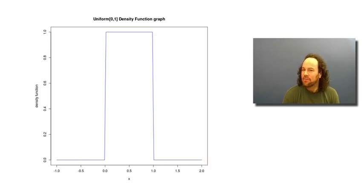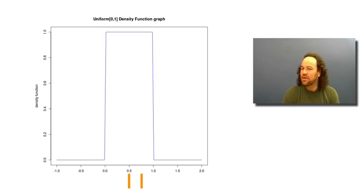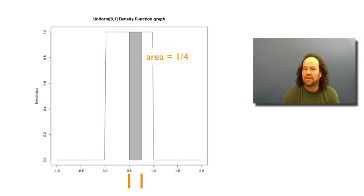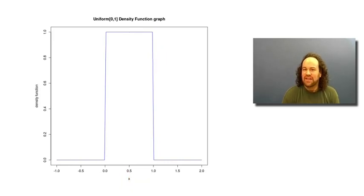We can talk about probabilities as being the area underneath the graph of this density function. For example, the probability that the random variable is between 1/2 and 3/4 is the shaded area under the graph between those points, which equals 1/4 as we already figured out. Once we understand density functions, we can use them for other distributions too.